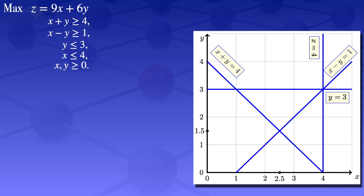To find the feasible region, we know it is the region which satisfies all the constraints. I can start by looking at the various regions on the graph and check if they satisfy all the constraints.